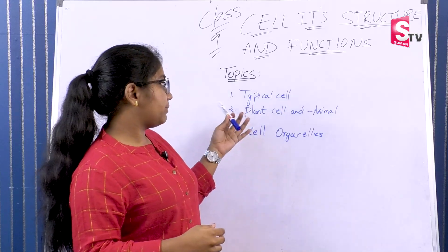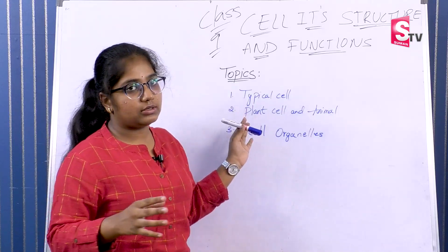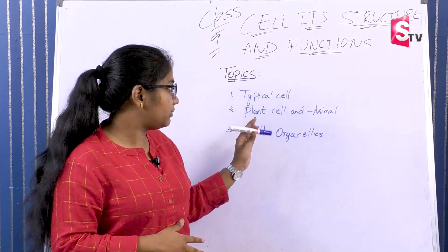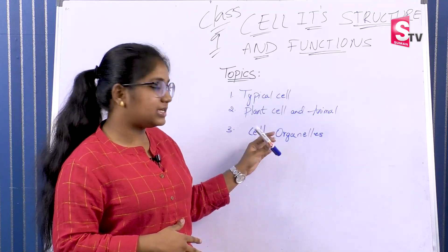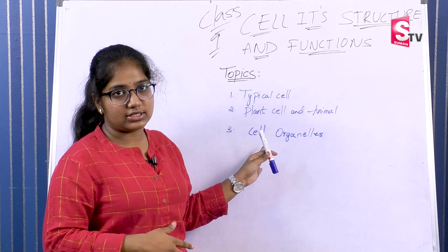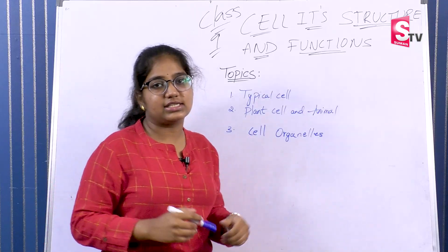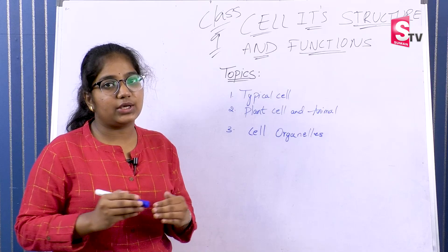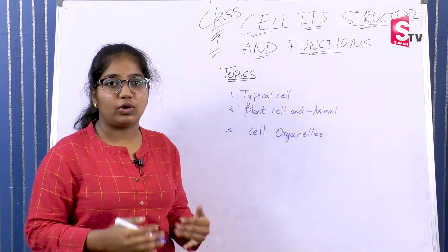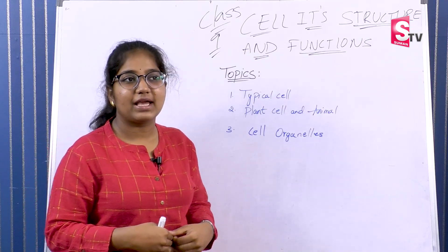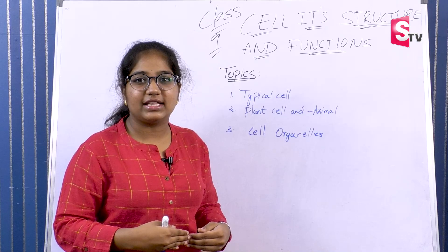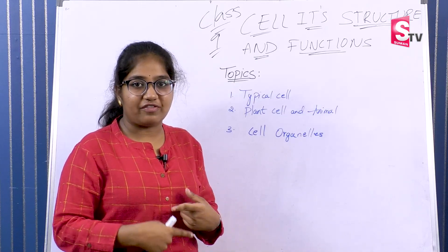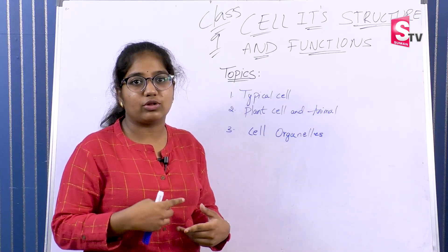Today we will discuss a few important topics in this chapter: typical cell, plant and animal cell, and cell organelles. First, what is a cell? The cell is the basic unit of life. A person's structure and function is based upon the cell.